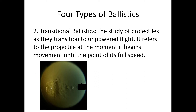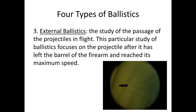Not to be confused with external ballistics. Transitional ballistics covers from the point a projectile begins to move until its fastest point. External ballistics is a bit different — it's the study of the passage of the projectile in flight after it has left the barrel of the firearm and reaches maximum speed.